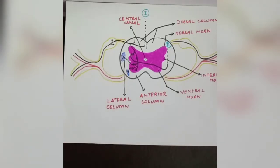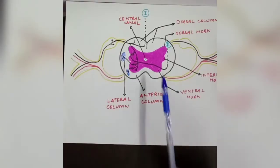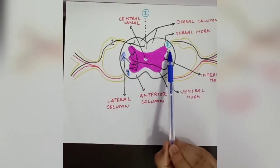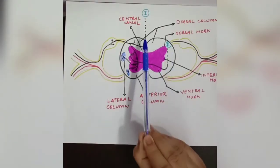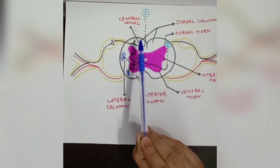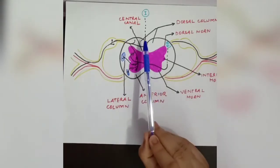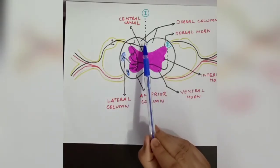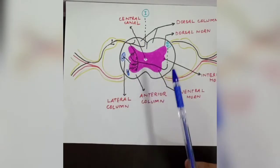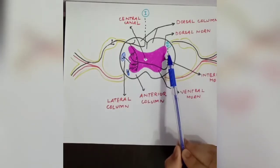In this video, the topic we are going to discuss is the anterolateral spinothalamic pathway, which is the second pathway apart from the dorsal column medial lemniscus pathway. The dorsal column medial lemniscus pathway was discussed in the previous video. Now we are going to discuss the second pathway, that is the anterolateral spinothalamic pathway.